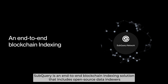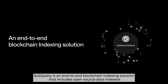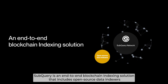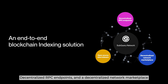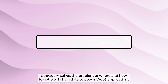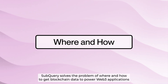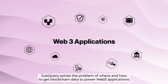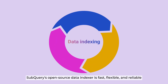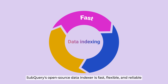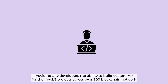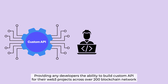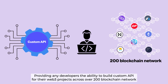Subquery is an end-to-end blockchain indexing solution that includes open source data indexers, decentralized RPC endpoints, and a decentralized network marketplace. Subquery solves the problem of where and how to get blockchain data to power Web3 applications. Its open source data indexer is fast, flexible, and reliable, providing developers the ability to build custom APIs for their Web3 projects across over 200 blockchain networks.